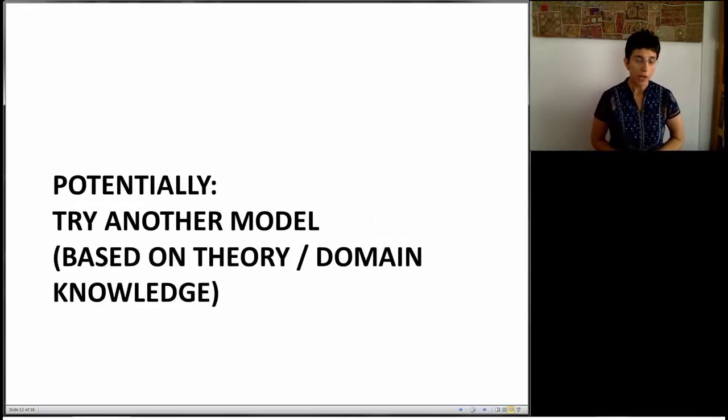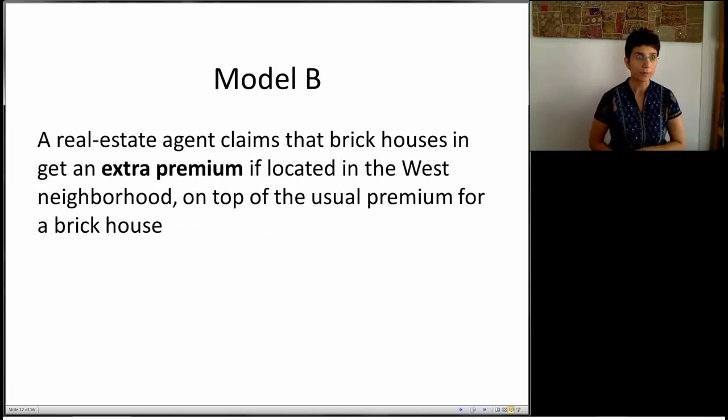What would we do at this point? Well, there are lots of other things we can do to try and improve our model and see whether we get a model that fits the data better, but also, of course, makes sense from a domain point of view. So let's consider just one other model. Let's assume that the real estate agent tells us that brick houses get an extra premium if they're located in the West neighborhood. In other words, we saw that brick houses do give some premium over non-brick houses. If you look at that coefficient, you'll see that it's actually positive, and that was a dummy variable. But what the real estate agent is telling us, not only will a brick house be more expensive, but if it's in the West neighborhood, it will be extra expensive. And we want to use our model or to build a model that will test this particular question. How do we do this?